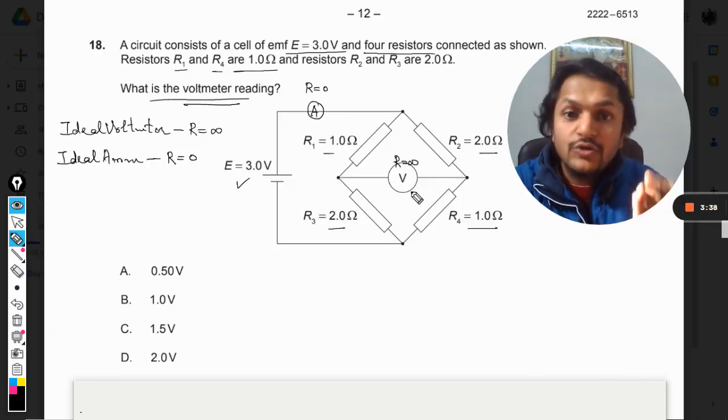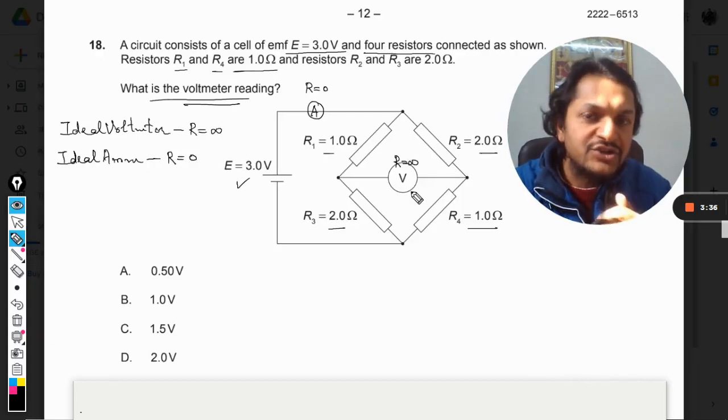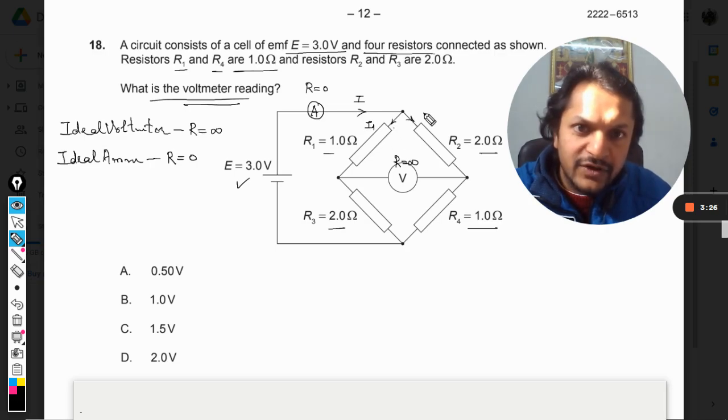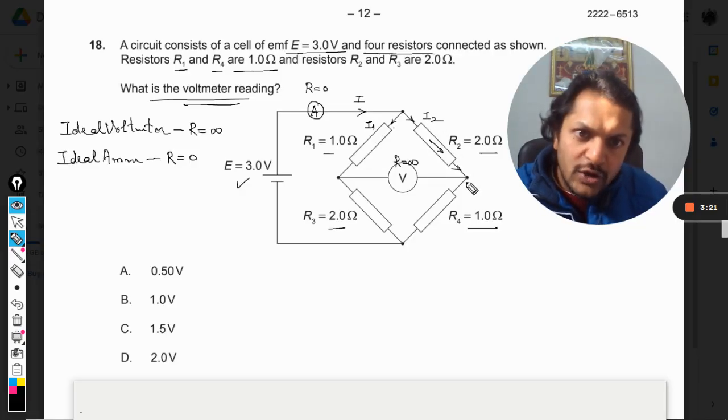Now if the resistance is infinite, obviously it will not allow the current to even enter into this branch. It means that all of the current that is coming from this place will get divided into two parts. So let me call this as I1 and this as I2.